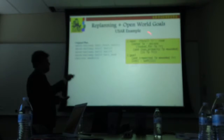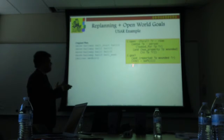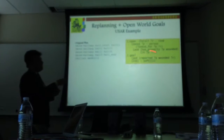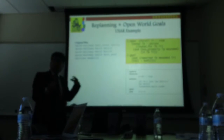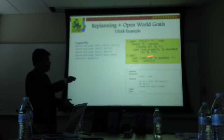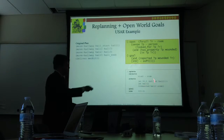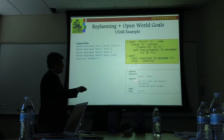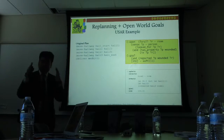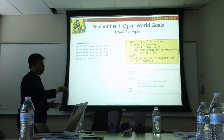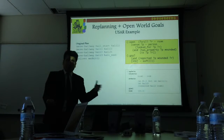While the robot is executing this original plan, it's given new information: an open-world quantified goal — that there may be wounded persons inside rooms, so it should look for wounded people. Along with this, because the robot was interrupted during execution, a state update is also sent. In this case, the robot is told there's a new room that exists, connected to one of the hallway segments.